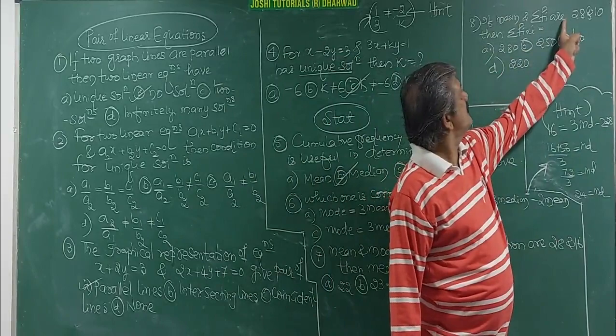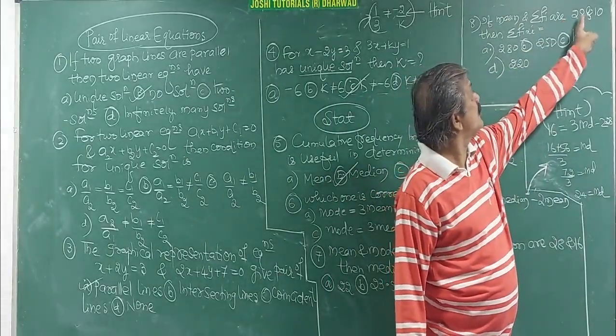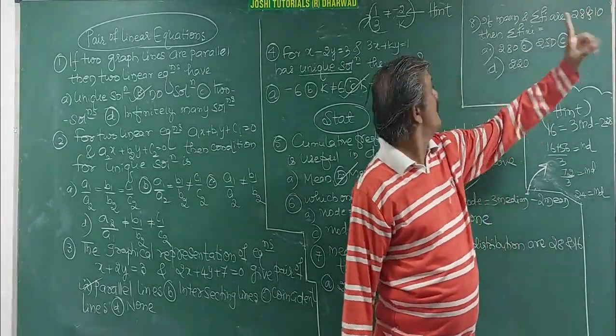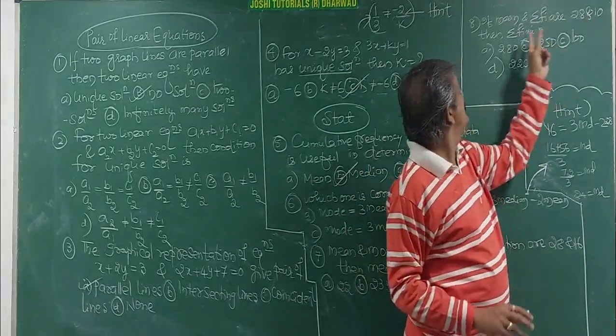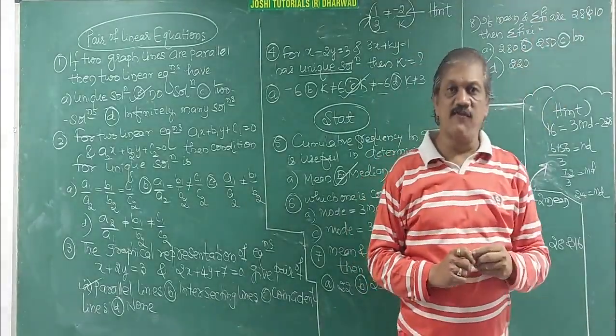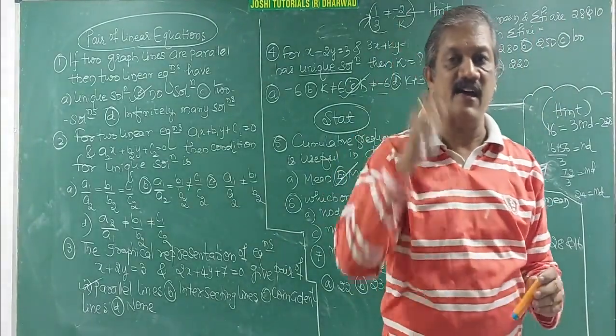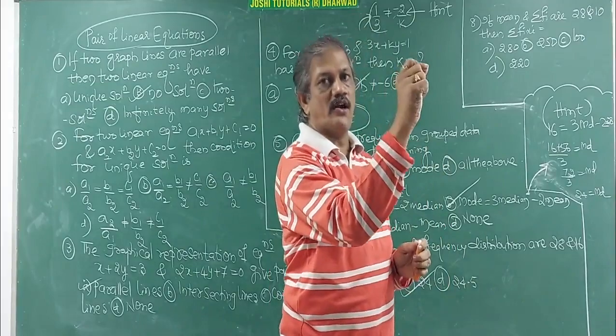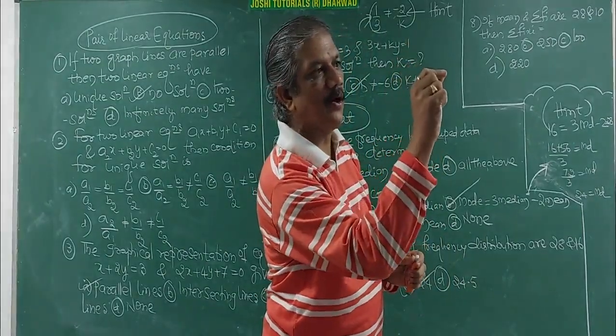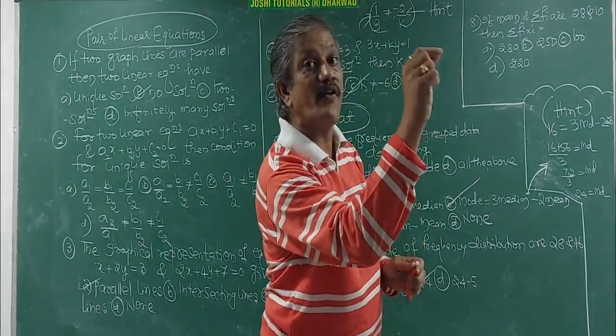Hint it is. And this problem. Mean and Fi summation are 28 and 10 respectively. Means mean is 28, summation of Fi is 10. What is the answer for summation of Fi xi? You must know the formula.